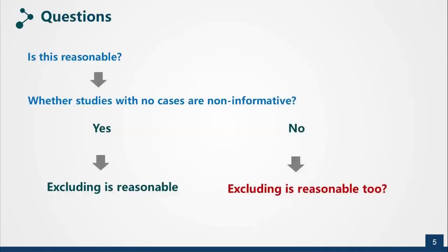Now here comes a question: is it reasonable to exclude double zero studies in the meta-analysis? To address this question, we need to understand whether double zero cases studies are non-informative or not. If they are non-informative, it would be reasonable to exclude these studies. But what if they are not necessarily non-informative — is it still reasonable to exclude them?